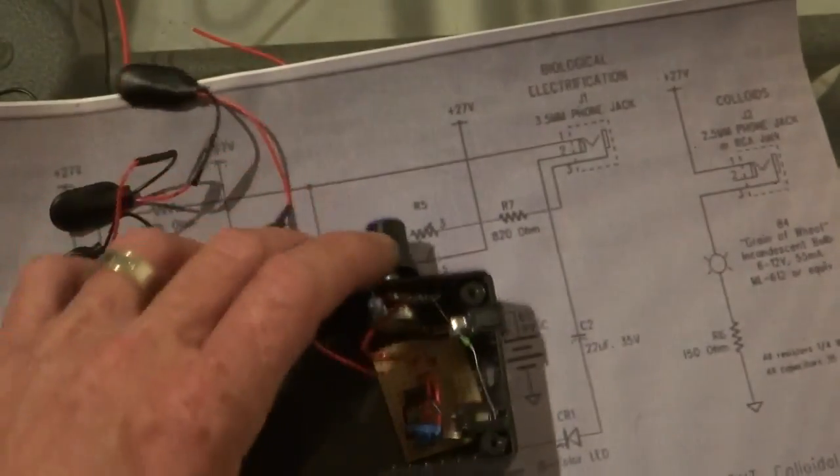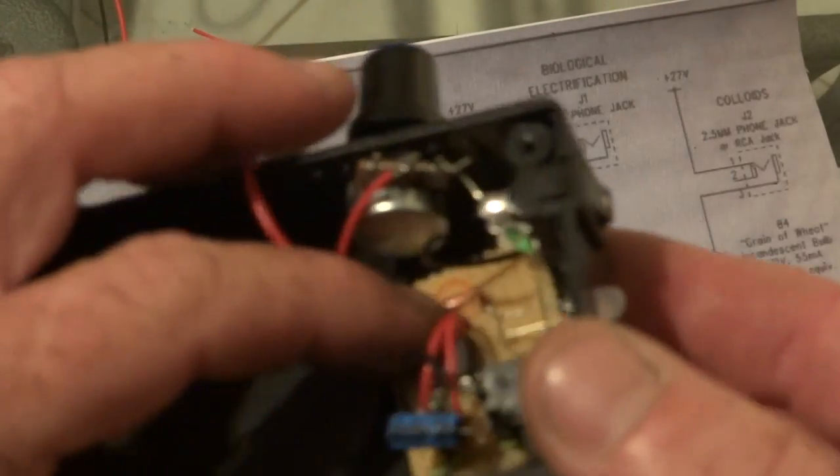Alright, the next step is to get the negative wire, the earth wire that comes out of the board, goes to the switch.